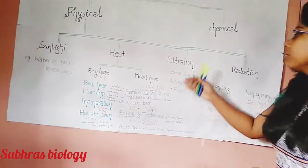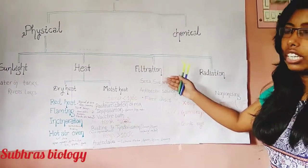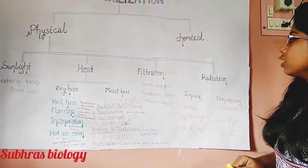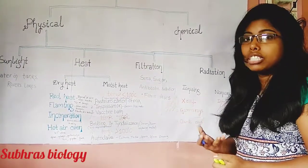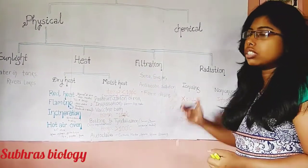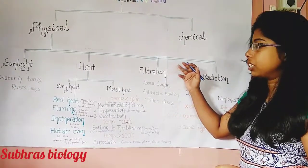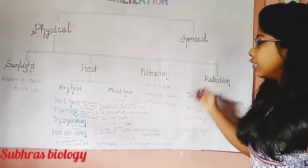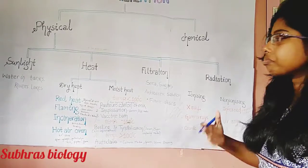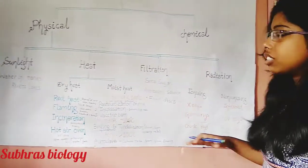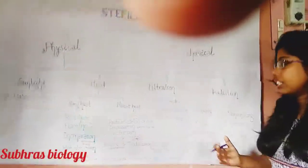The third type of physical sterilization is filtration. Things which get damaged by heat are sterilized by the filtration method. Sera, sugars, and antibiotic solutions are examples of things which are filtered for sterilization.